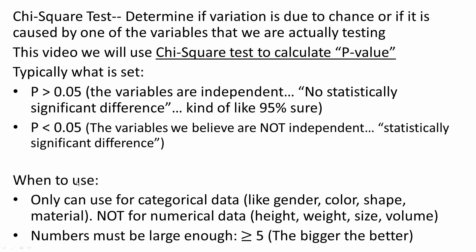When to use chi-square test: you can only use it for categorical data, like gender, color, shape, or material — not for numerical data like height, weight, size, and volume. Numbers must be large enough, typically greater than 5, but the bigger the better.